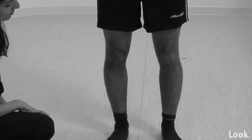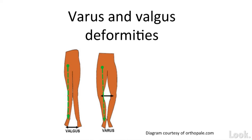Look at the alignment of each knee. In varus deformity or bow legs, the tibia is deviated medially with respect to the femur at the knee joint, usually due to the medial side of the joint being affected by osteoarthritis. In valgus deformity or knock knees, the legs splay out laterally when the lateral side of the joint is affected, usually by rheumatoid arthritis.